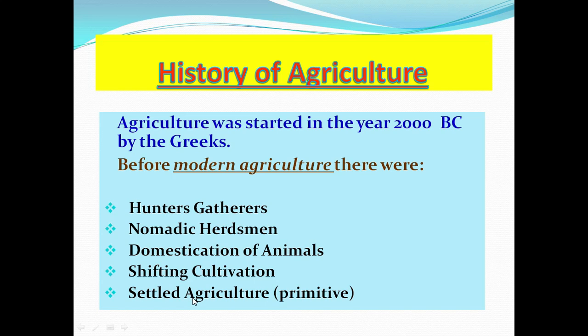We are now practicing modern agriculture, but before agriculture became modern, humans used other ways to feed themselves. The hunter would go in search of animals for meat, and the gatherers would collect wild foods. Nomadic herdsmen were people who followed animals around without a settled home to secure their food supply.